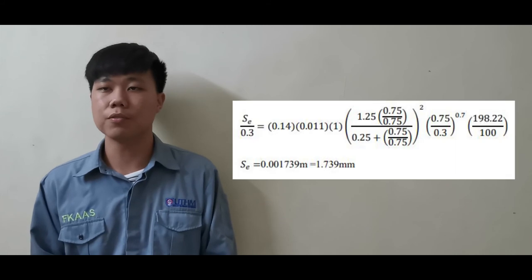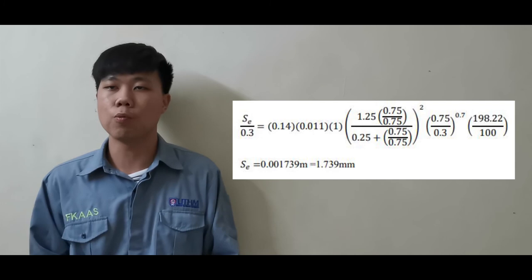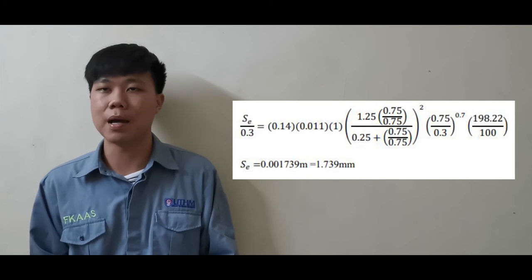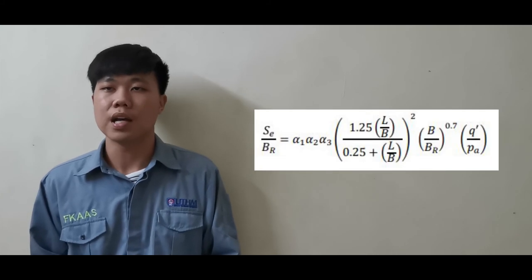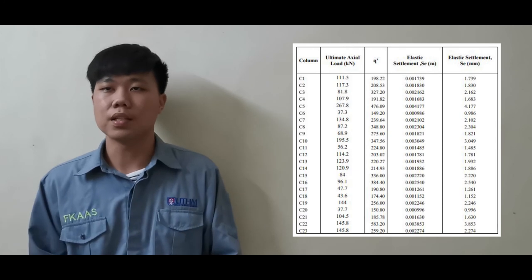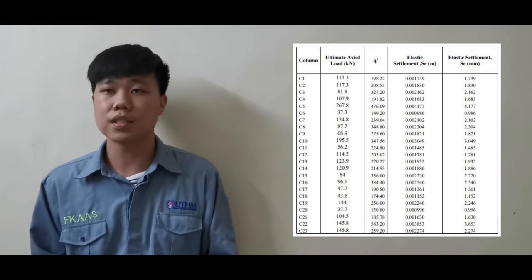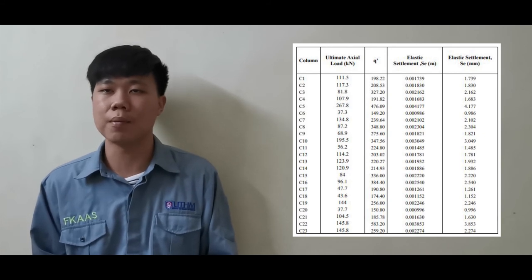This is the example for column 1, and the settlement value is 1.739mm. For columns 2 to 23, we calculate using the same equation and the results are shown in a table. From the table, the settlement value ranges from 0.986 to 4.177mm. Since all settlement values are less than 5mm, it can be said that the soil is good in resisting vertical load.